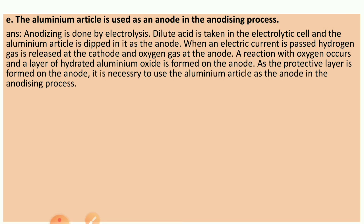E: The aluminum article is used as an anode in the anodizing process. Answer: Anodizing is done by electrolysis. Dilute acid is taken in the electrolytic cell and the aluminum article is dipped in it as an anode. When electric current is passed, hydrogen gas is released at the cathode and oxygen gas at the anode. A reaction with oxygen occurs and a layer of hydrated aluminum oxide is formed on the anode. As the protective layer is formed on the anode, it is necessary to use the aluminum article as the anode.